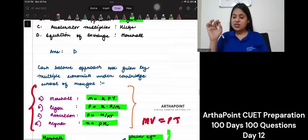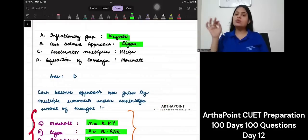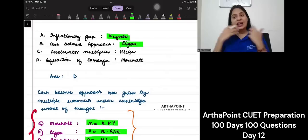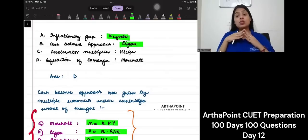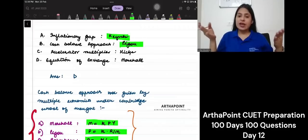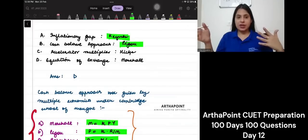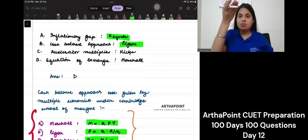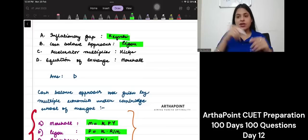Next, let's come to accelerator multiplier. It was given by Higgs. I will do this full-fledged question in the coming class. Accelerator multiplier actually derives the relationship between investment and income. Until now we said that if income increases, investment increases, and if investment increases, income increases.